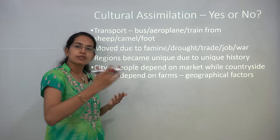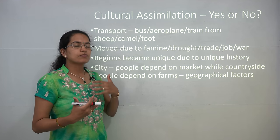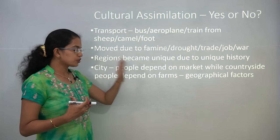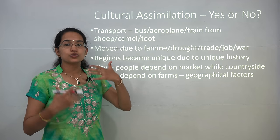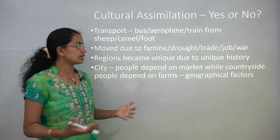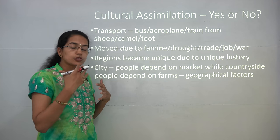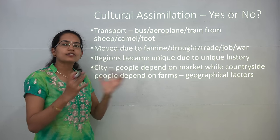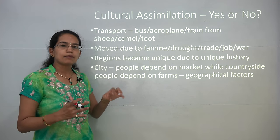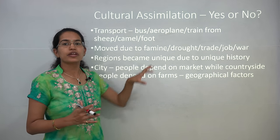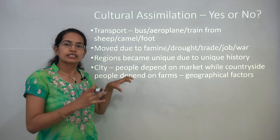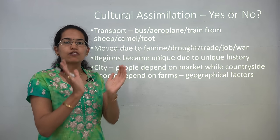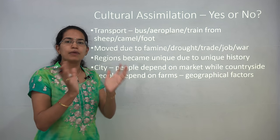People have been moving constantly — they might move for jobs, for education, due to drought, famine, war, earthquake, or any natural disaster, and also because of trade. All these movements have led to an intermingling of people. So a person from Rajasthan moving to West Bengal takes along the culture from Rajasthan to West Bengal, leading to a kind of cultural assimilation among different areas.